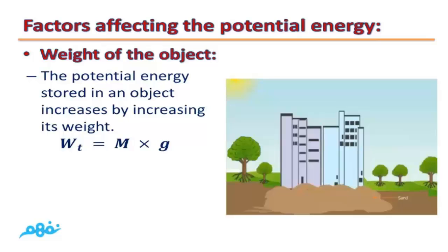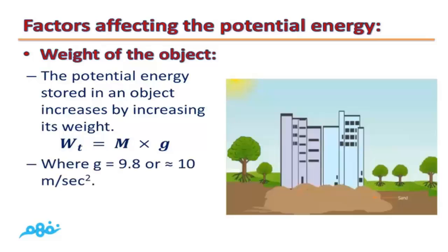To calculate the weight, we have to multiply mass times gravitational acceleration, or g, where g is a constant which is equal to 9.8, or approximately 10 meters per second squared.